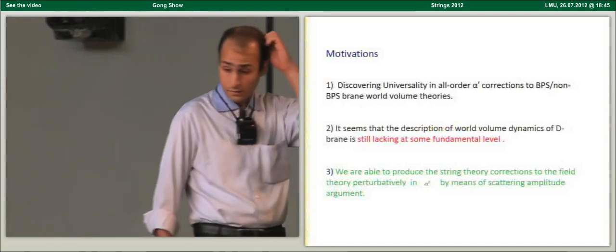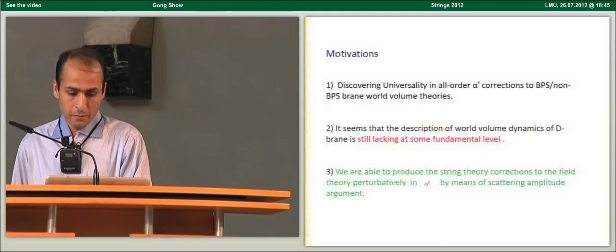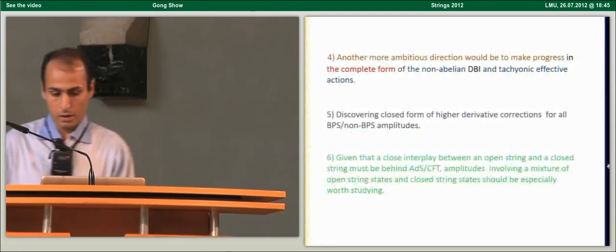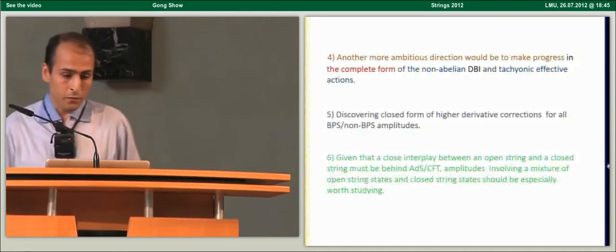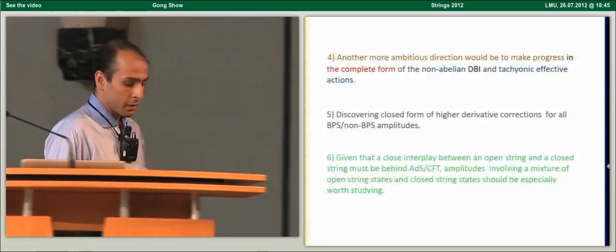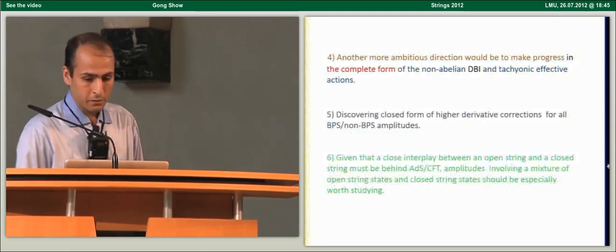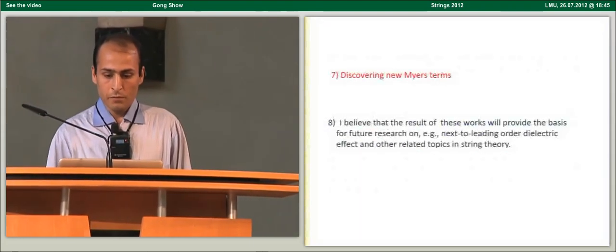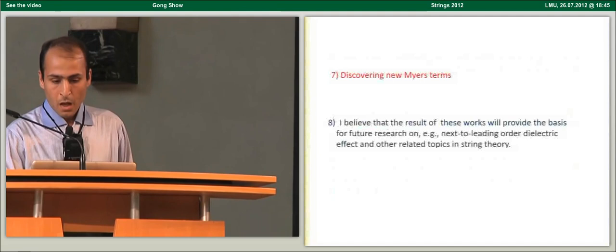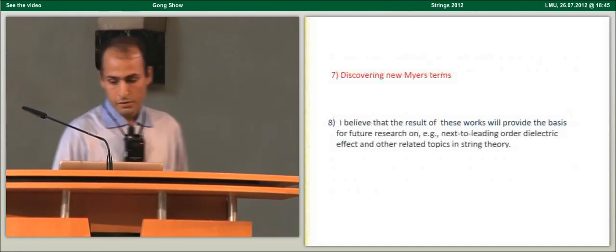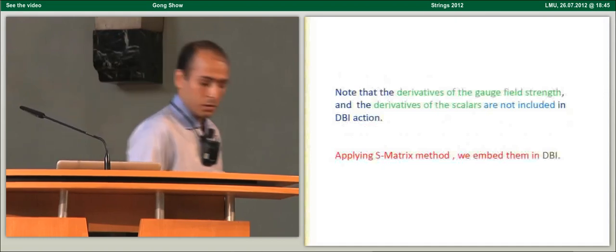Finding a closed form of higher derivative corrections, and given the close relation between open and closed strings behind AdS/CFT, amplitudes involving a mixture of open and closed strings should be especially worth studying. The derivative of the gauge field strength and the derivative of scalars are not included in DBI action. Using the matrix method, we were able to embed them in the DBI effective action. Suppose we want to produce the amplitude of one closed-string Ramond-Ramond and three scalar-fermion type II superstring. The expansion is a low-energy expansion where by sending alpha-prime to zero, we end up with all infinite massless poles in the T+S+U channel.